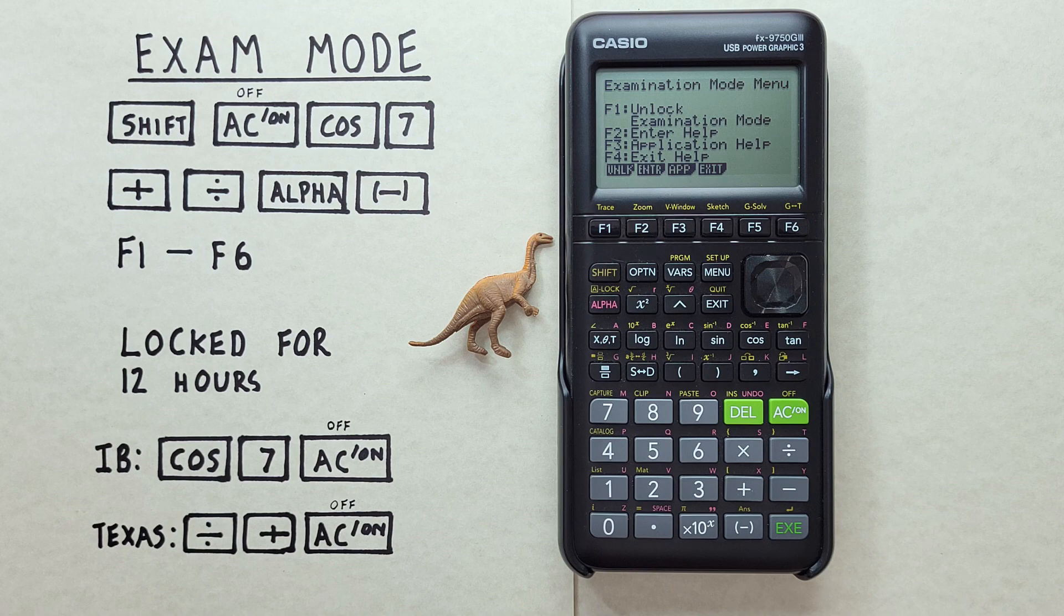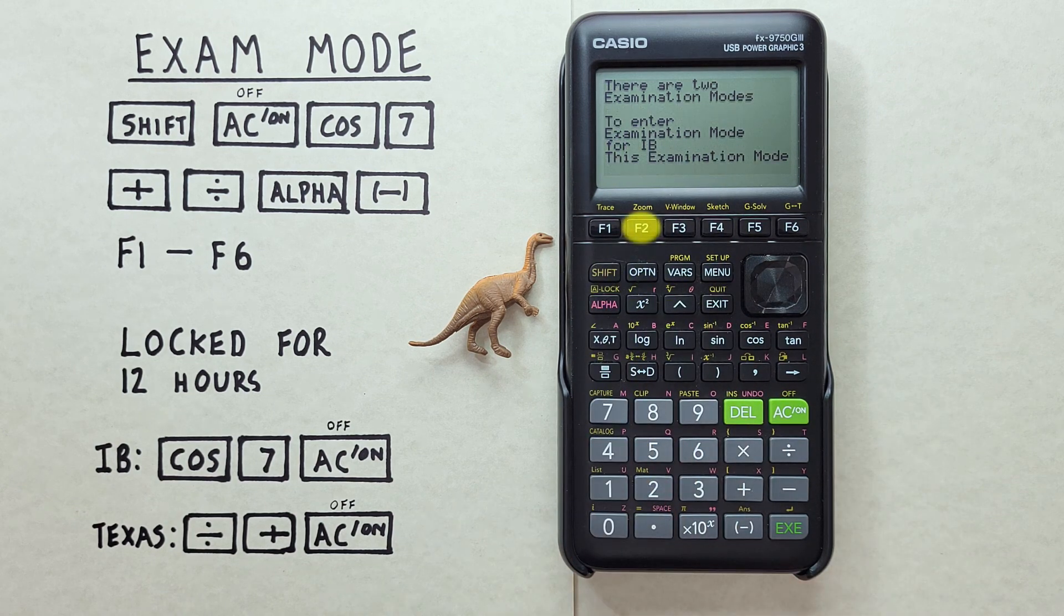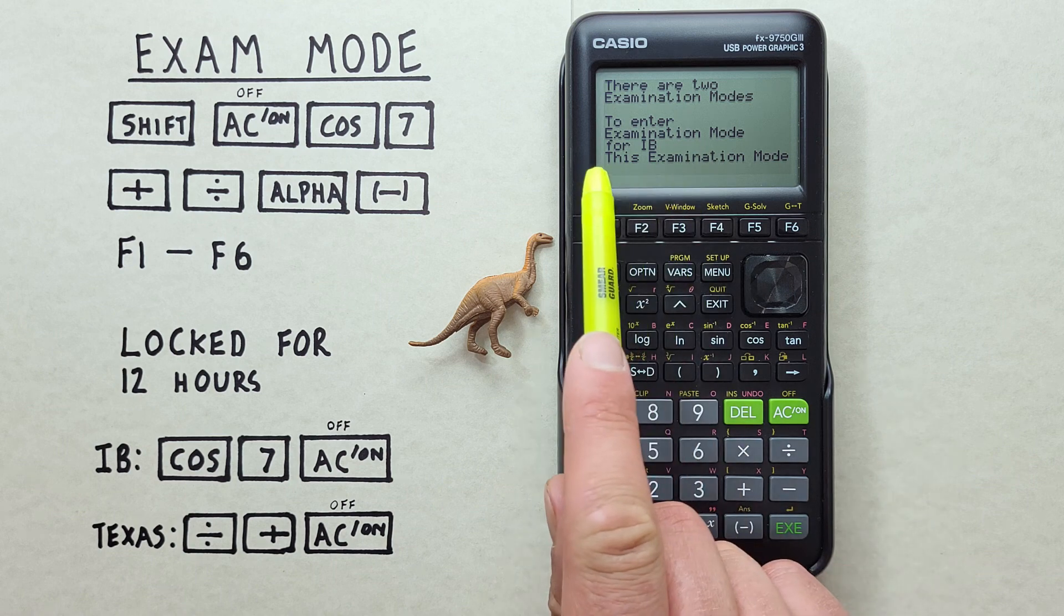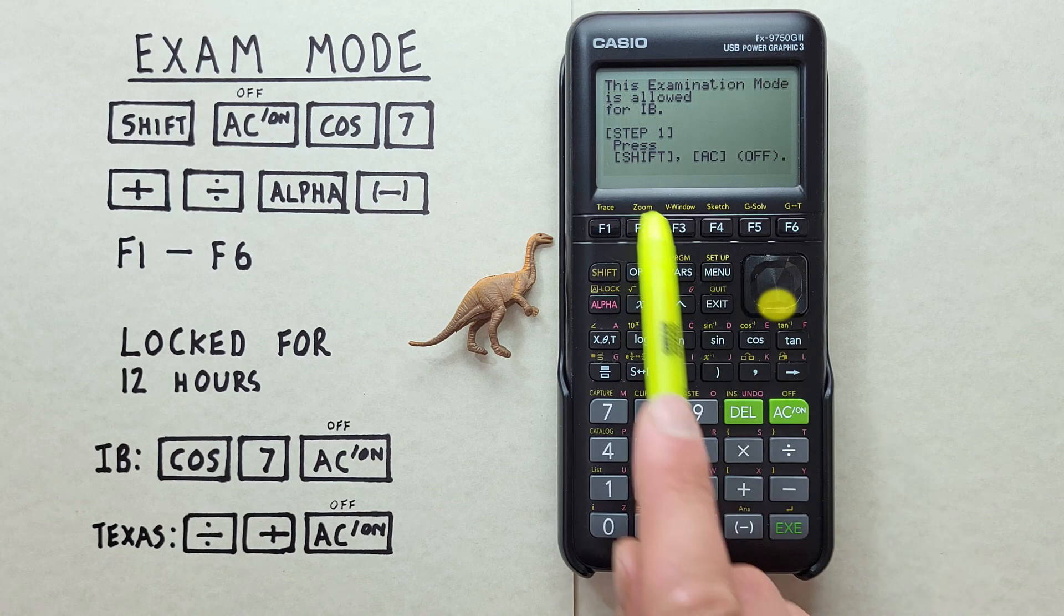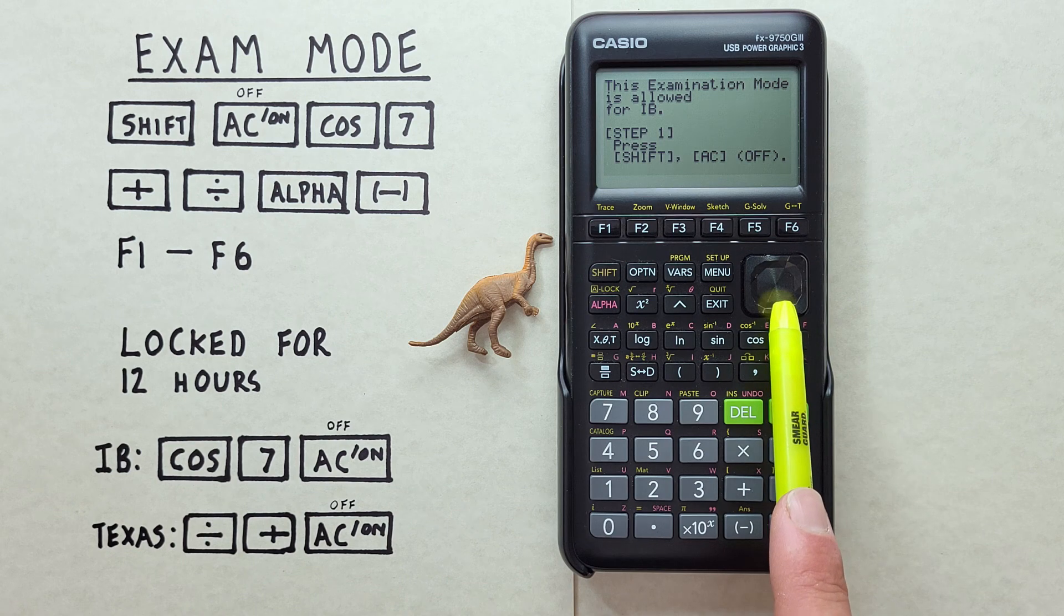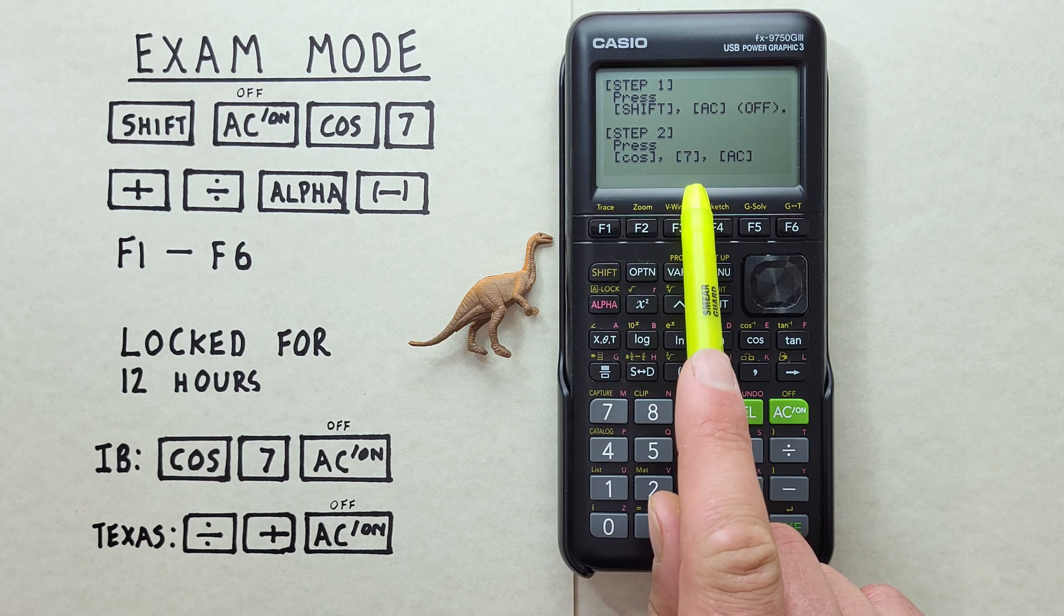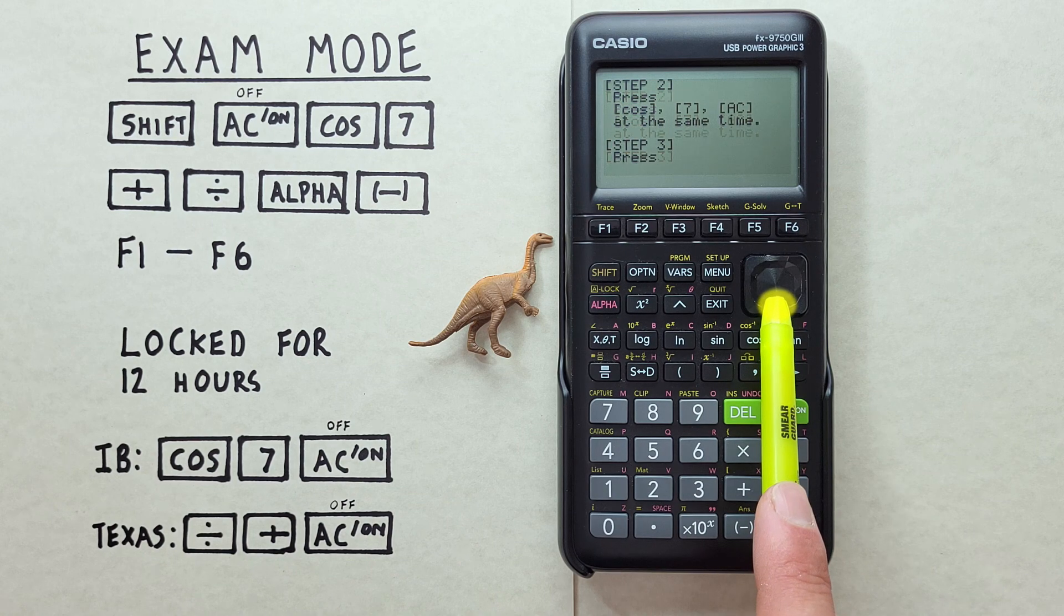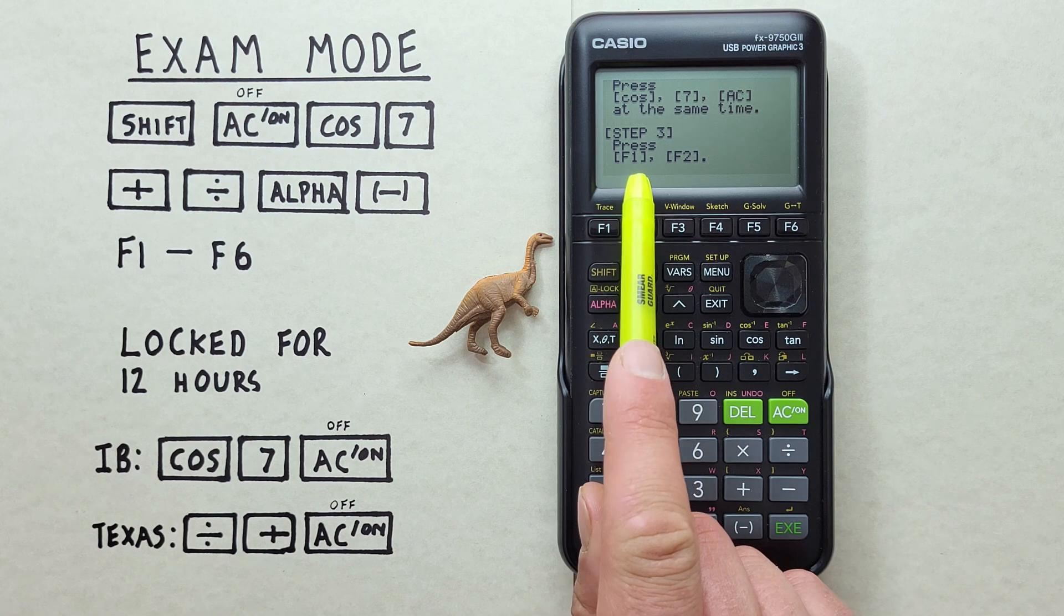If we want to see how to turn it on, we can go to the F2, or Enter Help. Where it reminds us there are two Examination Modes. And to enter Examination Mode for IB, we do the following. First, Step 1. Press Shift AC off to turn off our calculator. Then press and hold COS, 7, and AC. There we go. At the same time. And then we'll see a menu where we can confirm, yes, we do want to turn on Examination Mode.